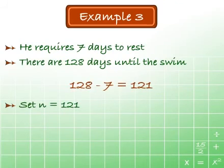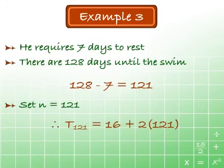So we set n equals 121. Therefore, the 121st term, which is t121, equals 16 plus 2 times 121, which equals 16 plus 242, which equals 258.